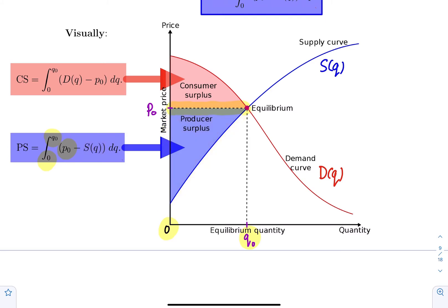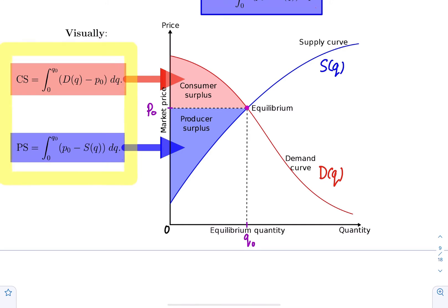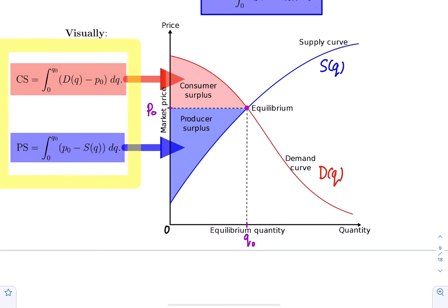In a nutshell, these two definite integrals — which are pure applications of definite integration to compute area between two curves — are going to compute the consumer surplus in red and the producer surplus in blue.